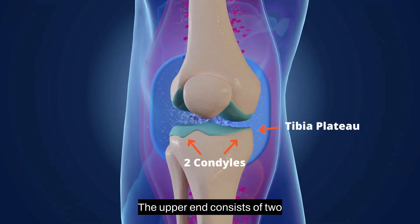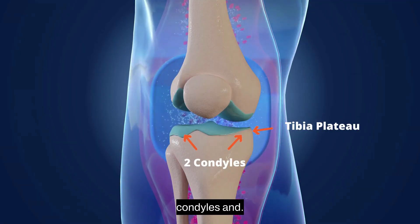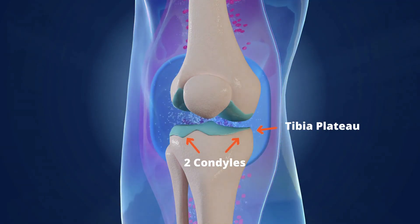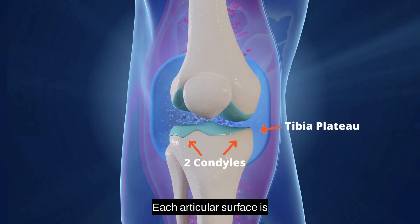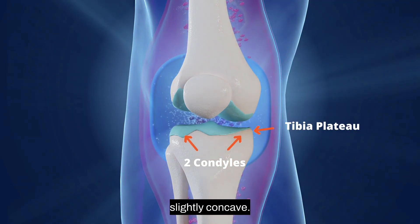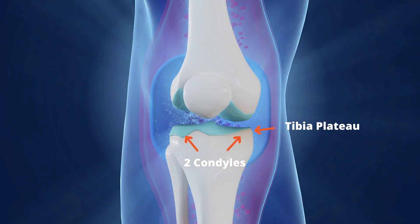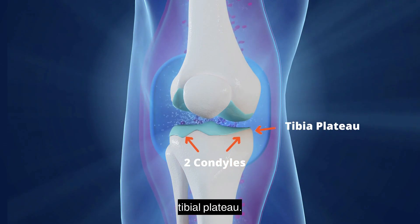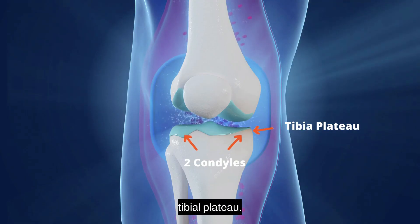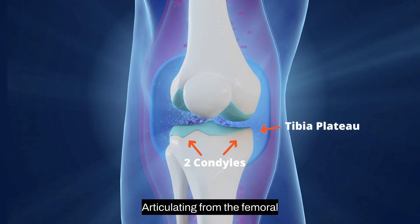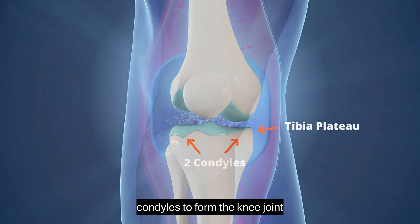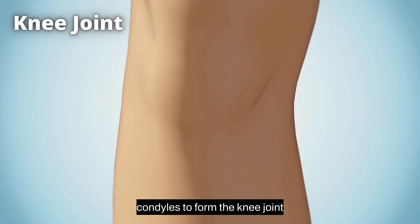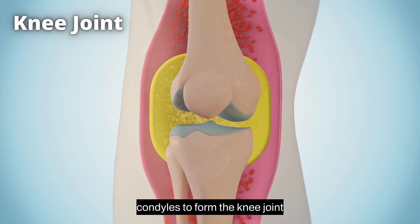The upper end consists of two condyles and each articular surface is slightly concave. The two surfaces are called the tibial plateau, articulating from the femoral condyles to form the knee joint.